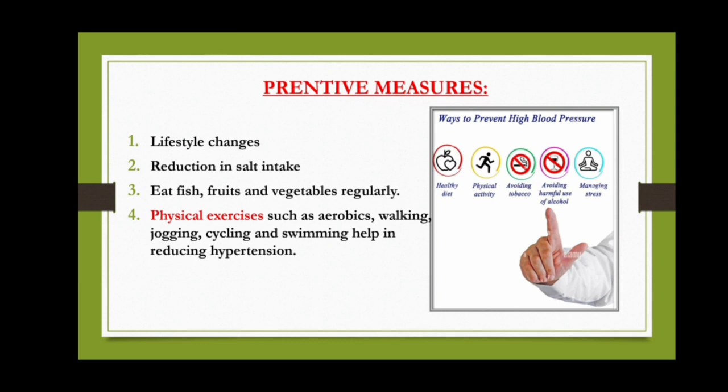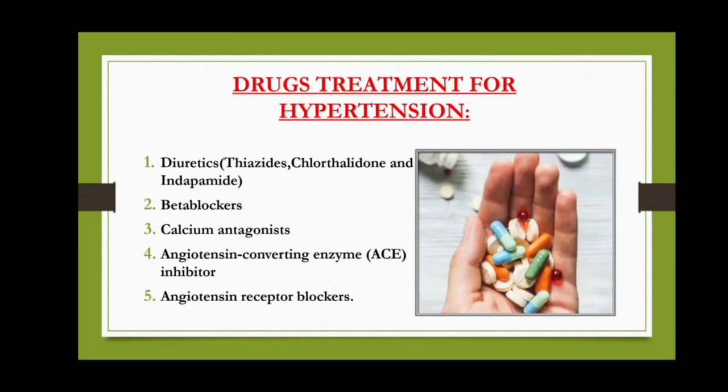Drug treatment for hypertension includes: diuretics such as thiazides, chlorthalidone, and indapamide; beta blockers; calcium antagonists; angiotensin converting enzyme inhibitors; and angiotensin receptor blockers. Thank you.